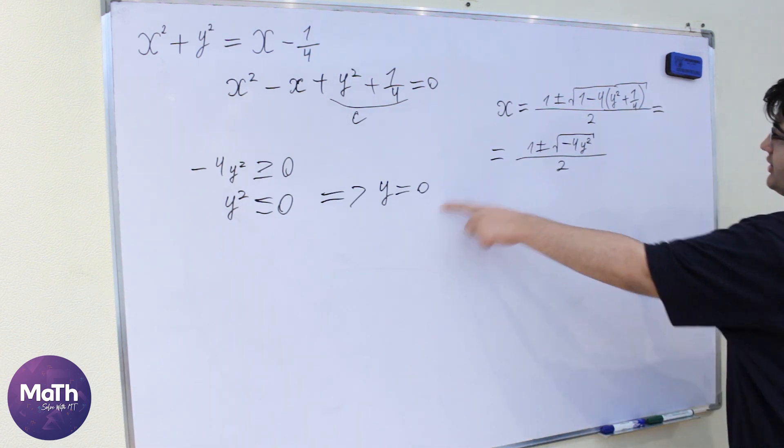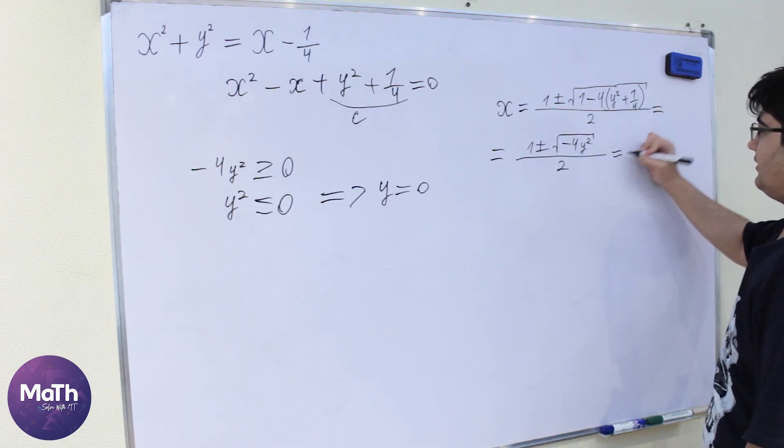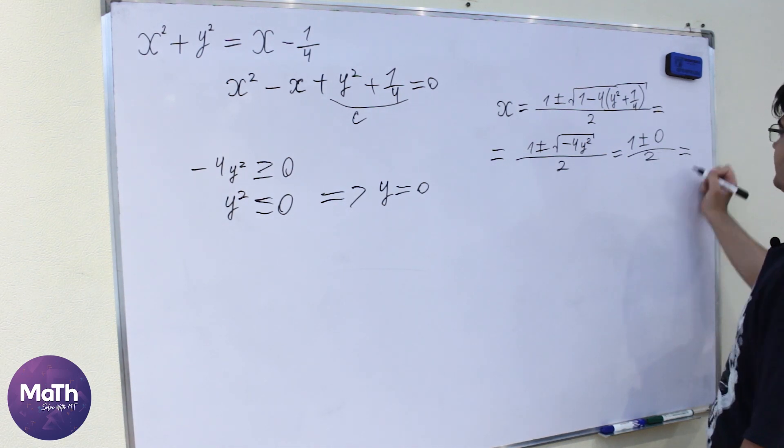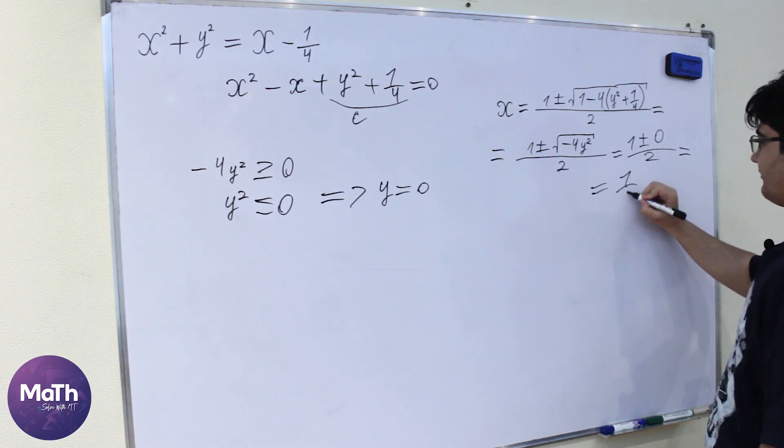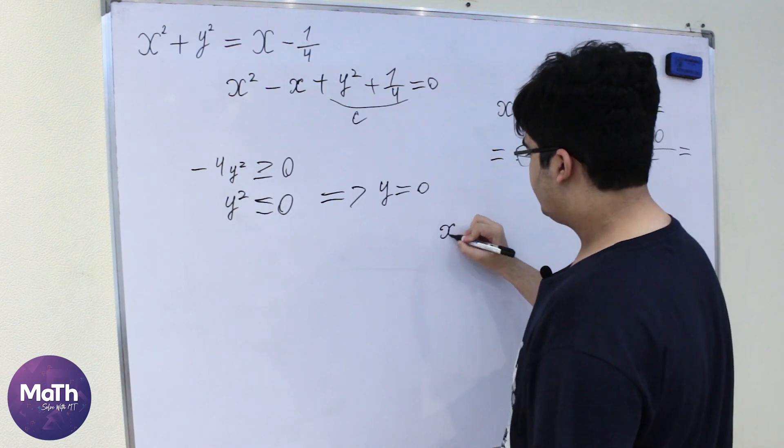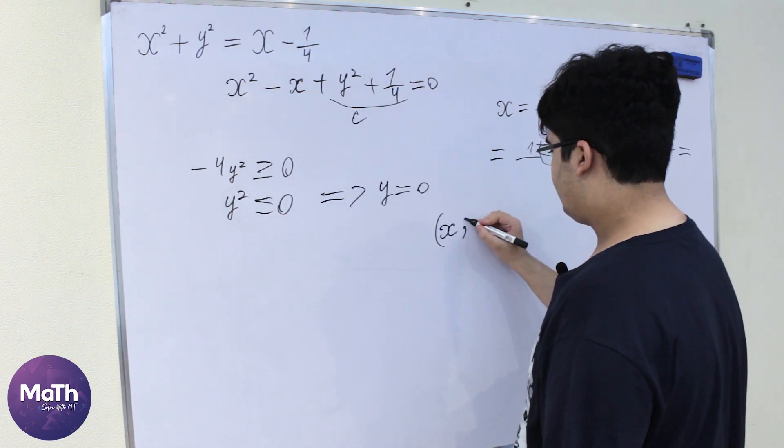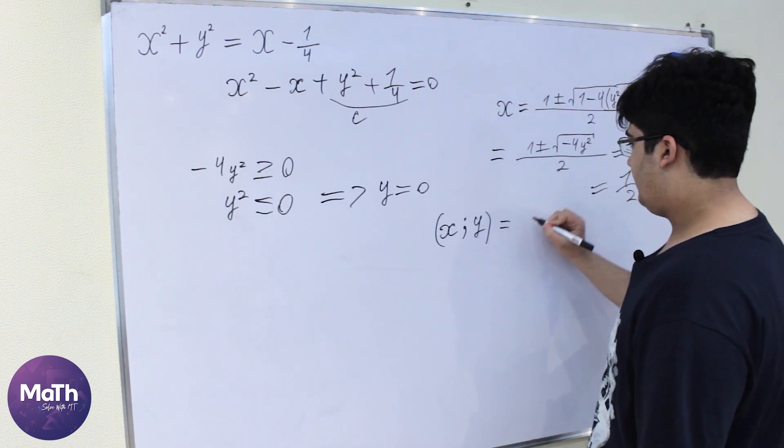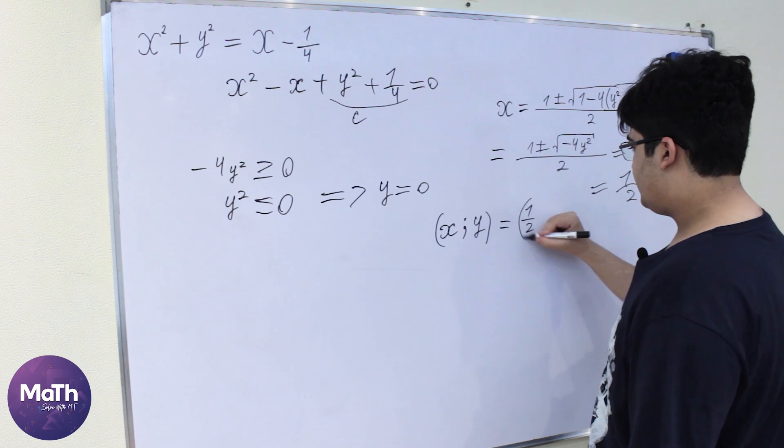And if we put it here we'll have 1 plus minus 0 divided by 2 which gives us 1/2. So x is equal to 1/2. So the solution over here is 1/2 and 0.